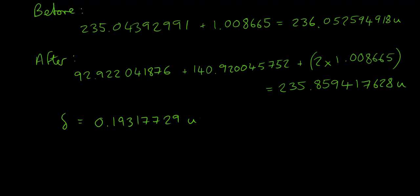So, we can take our shortcut as before to determine the binding energy E, which will be 0.19317729, multiplied by 931.5 from your data booklet, to give us an answer of 180 mega electron volts.